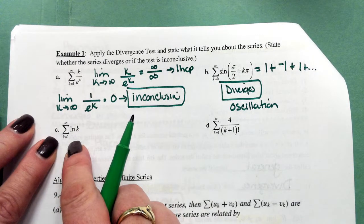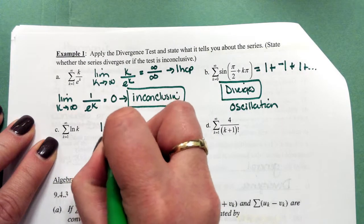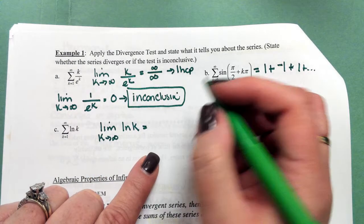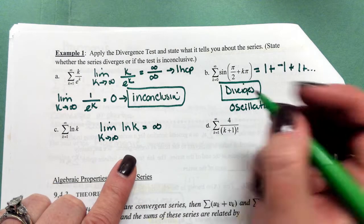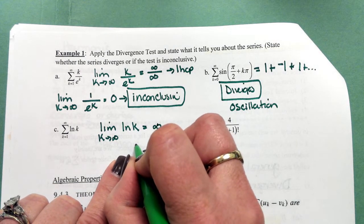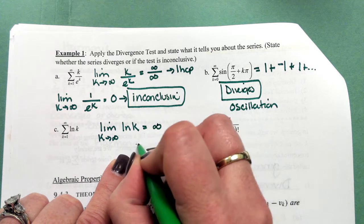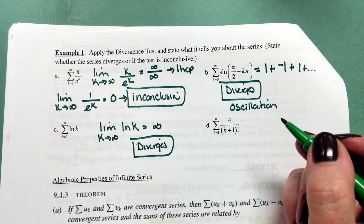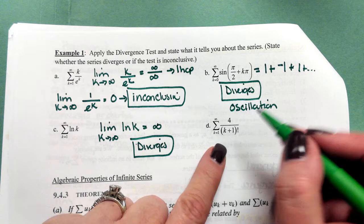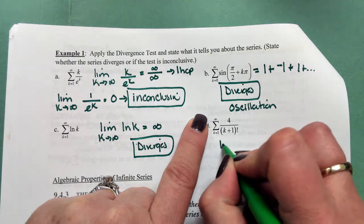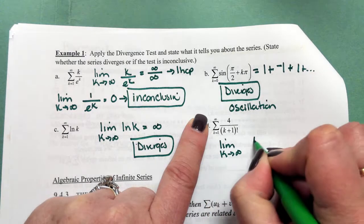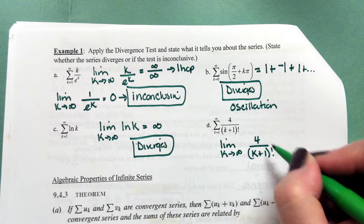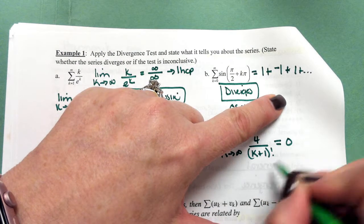For the series of ln(k) from k=1 to infinity, the limit as k→∞ of ln(k) is approaching infinity. So the divergence test tells us this is going to diverge. And for the series 4/(k+1)! from k=1 to infinity, the limit as k→∞ of 4/(k+1)! — this is a constant divided by a very large number, approaching 0. The test is inconclusive.